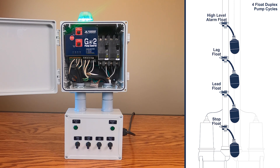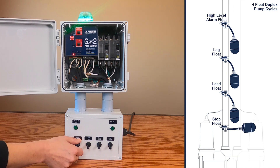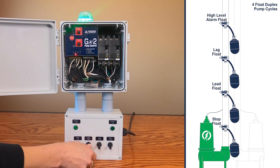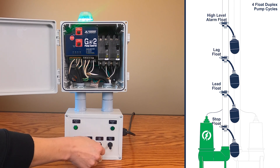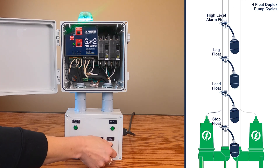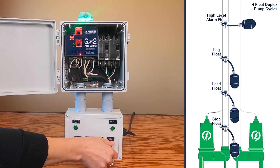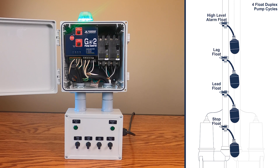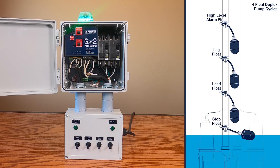Four toggle switches are used for float simulation: off, lead, lag, and high. Let's get started by simulating two pumping cycles where the lead pump will alternate after each pumping cycle. A pumping cycle is defined as when the pump turns on and when the pump turns off.